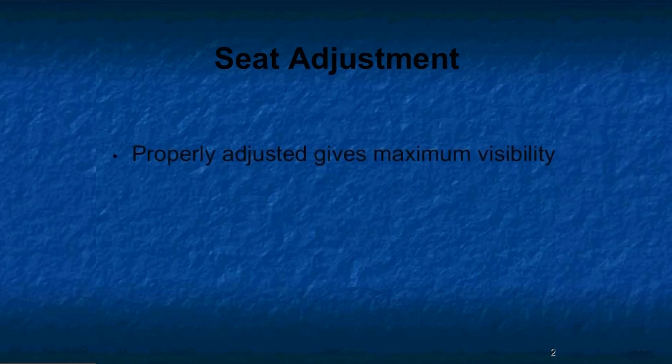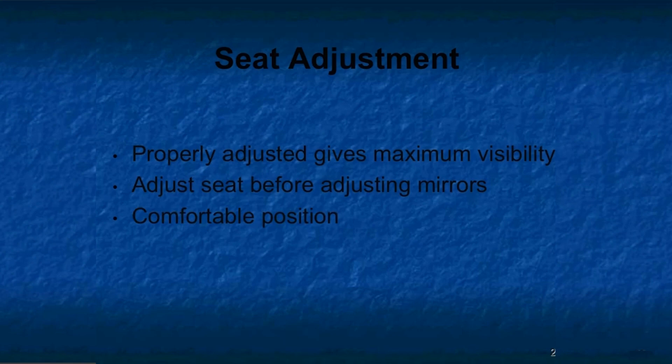Let's talk about seat adjustment. A properly adjusted seat will let you get the maximum visibility from your mirrors and out your windshield. So before adjusting your mirrors, make sure that your seat is in a comfortable position. One of the important things is the height. To prevent cutting off circulation in your legs, adjust the seat so that there is no pressure against the bottom of your thighs when you press the accelerator. Once you get your seat adjusted, then you can move the mirrors to get the best view around the bus.